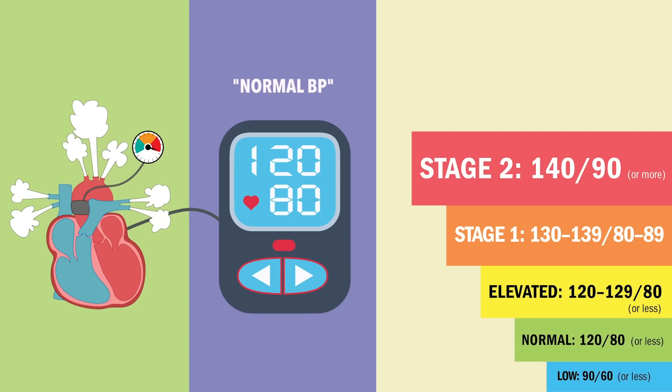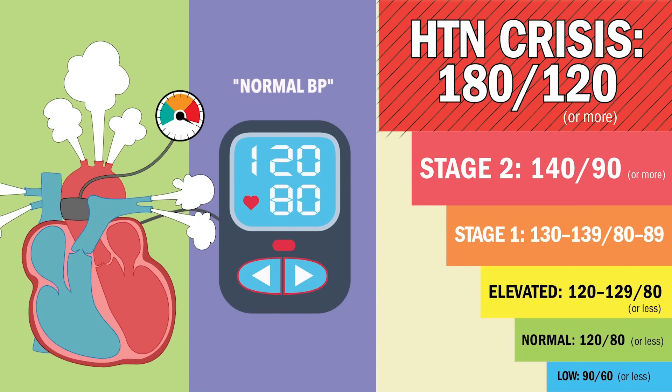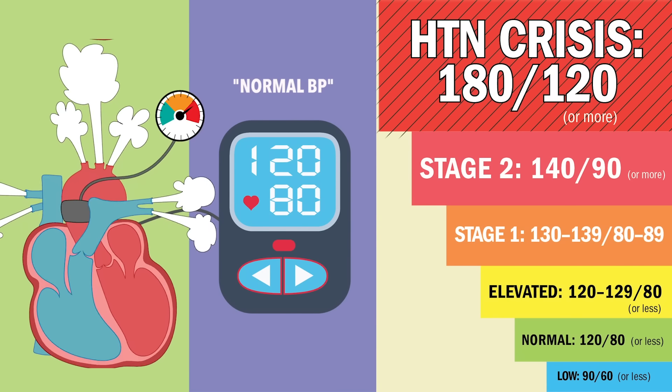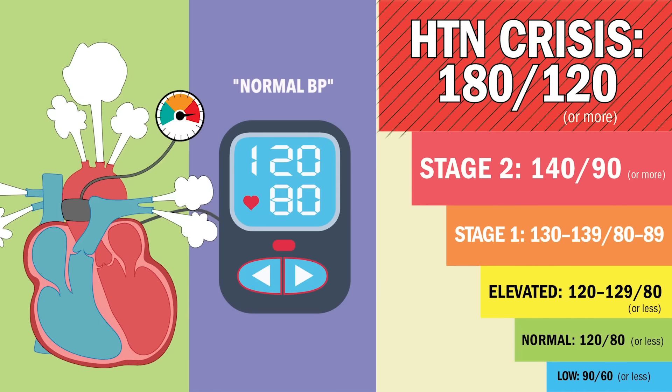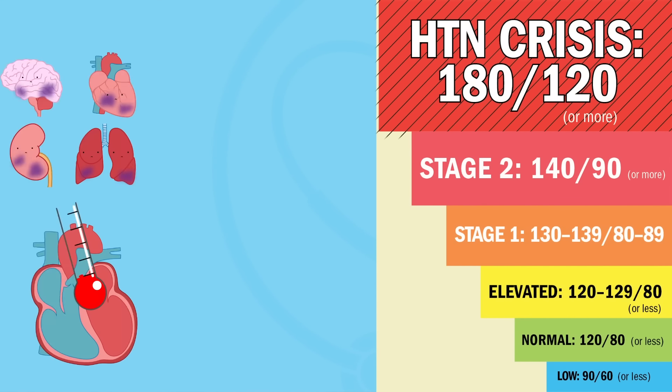Remember 140, the heart says oh lordy. Hypertension crisis is anything over 180 systolic and 120 diastolic or more. This is super dangerous because it can cause brain damage and even a heart attack.